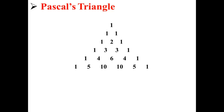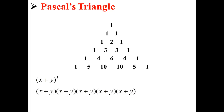Now what is Pascal's triangle? Well, let's say we have this binomial: x plus y to the fifth power. That's the same as x plus y, times x plus y, times x plus y, times x plus y, times x plus y. We can use Pascal's triangle to expand this quite easily, instead of applying the FOIL method over and over again.